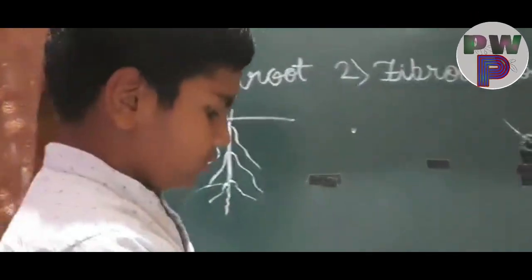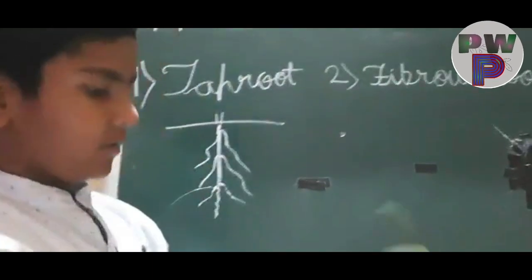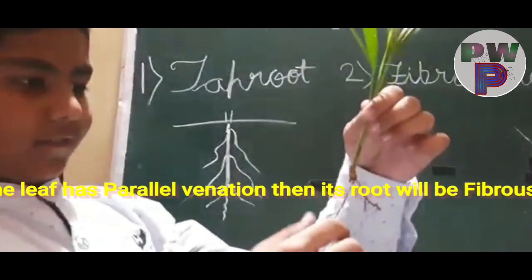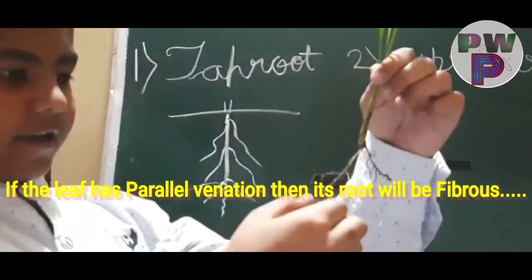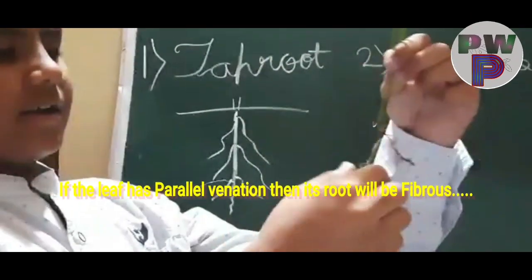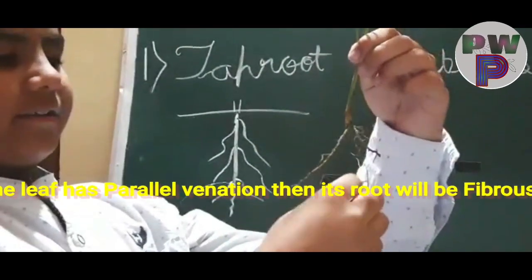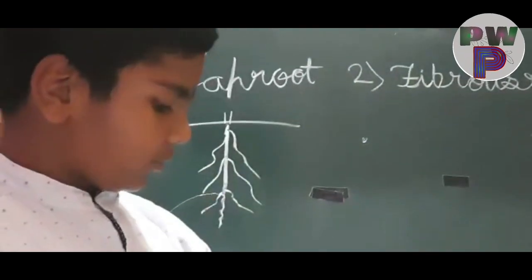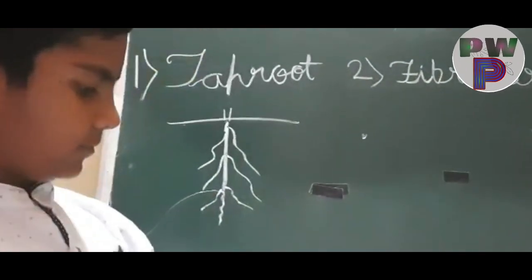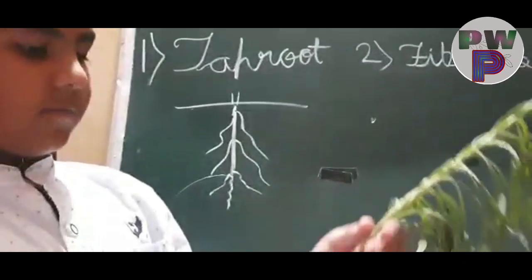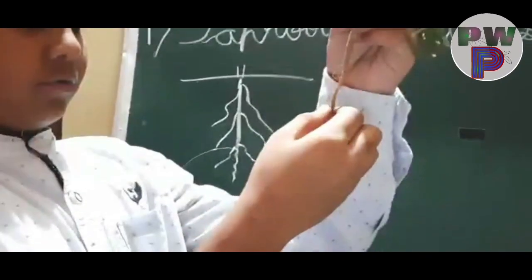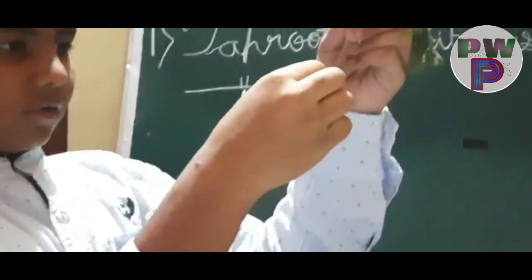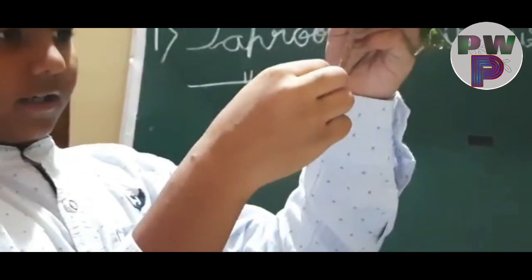One more I will show you. This is a plant. Here it is the main root, and it is the lateral root. One more I will show you. In this, the main root is this one, and the lateral roots are this one.